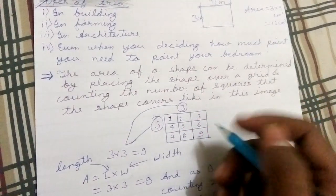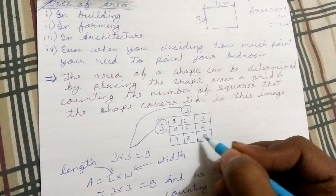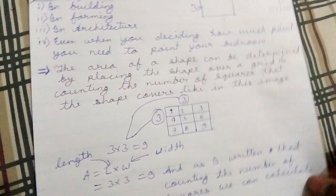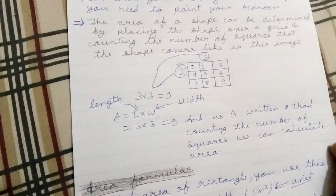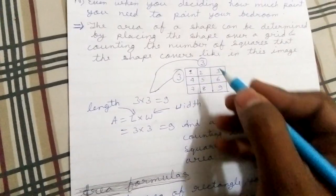So these three, one two three, and these three, one two three. We calculate how many blocks are there - one two three four five six seven eight nine. So there are nine blocks.